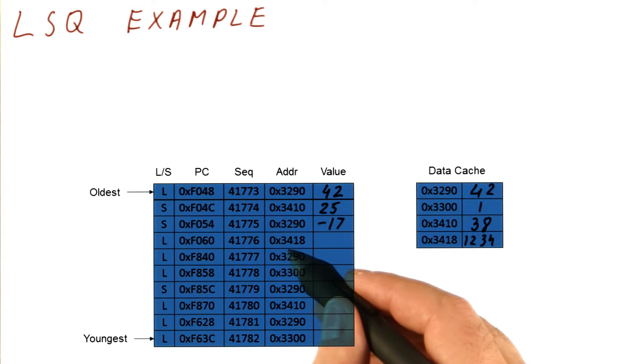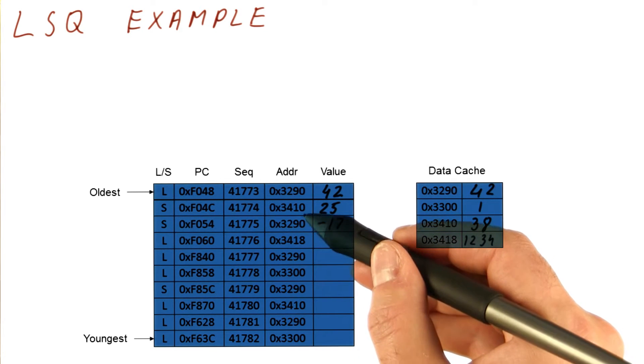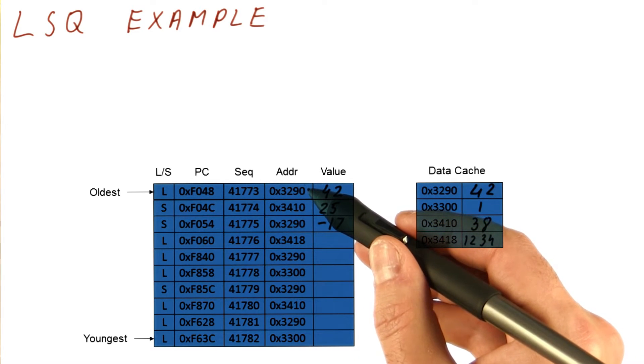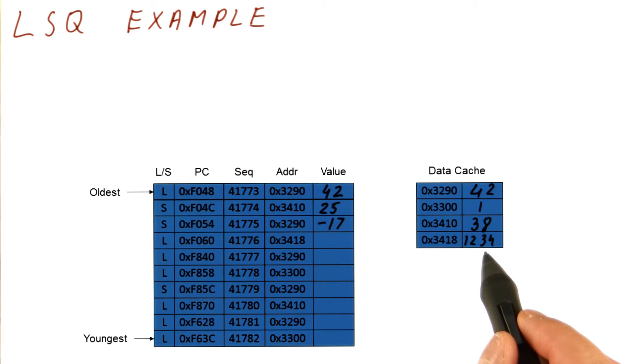Let's say that this next store also gets a value of minus 16 this time. Now let's say that this load executes next, accesses the address 3418, and it tries to see whether any of the previous stores matches that address. They don't, so it loads the value from memory. This is the address in the cache that matches this, so we're going to get 1234.